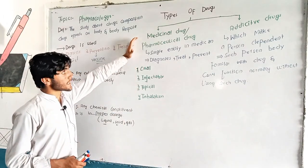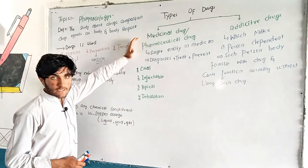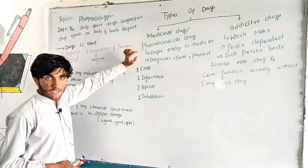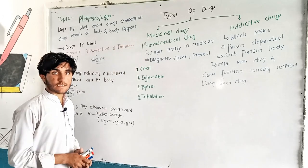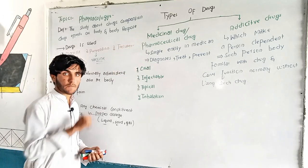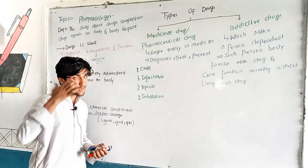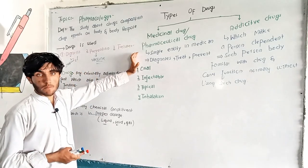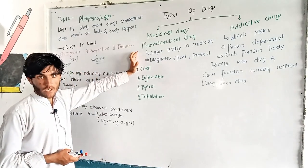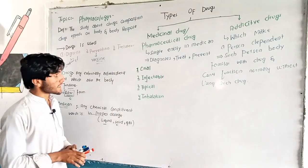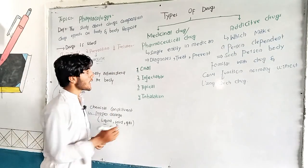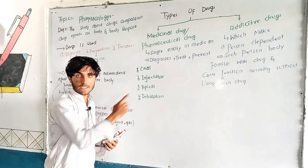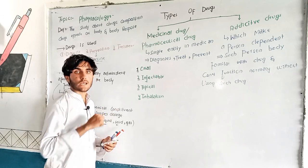First we have medicinal drugs — drugs can be medical with a single identity in medicine. The medicinals can be used as pharmaceutical drugs. Pharmaceutical drugs are used for diagnostic purposes, and diagnosis can be used for treatment and prevention.